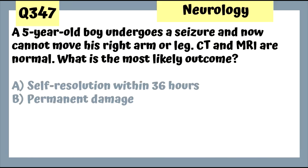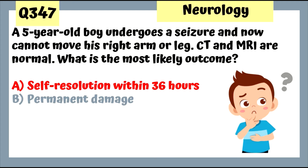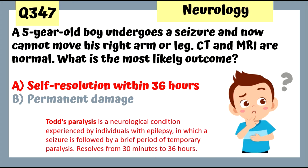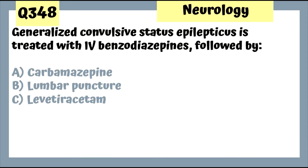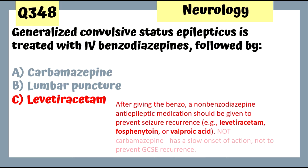Question 347: A 5-year-old boy after a seizure cannot move his right arm or leg; CT and MRI are normal — the most likely outcome is self-resolution within 36 hours. This is Todd's paralysis associated with seizures. Question 348: Generalized convulsive status epilepticus is treated with IV benzodiazepines followed by levetiracetam; fosphenytoin or valproic acid are used if benzos don't work.